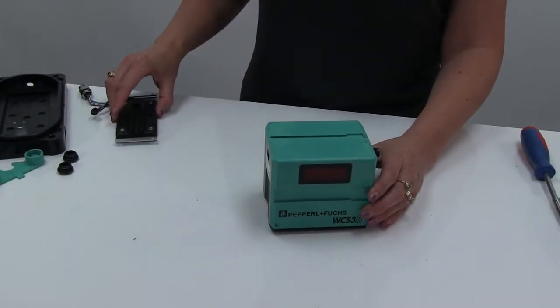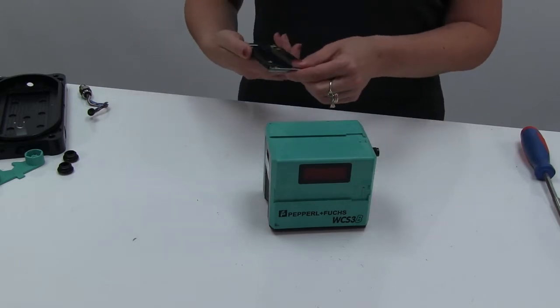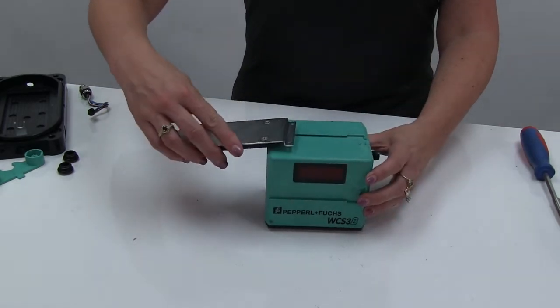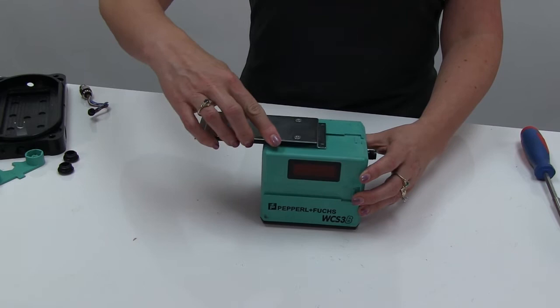The first step is to install the mounting plate on your reed head. Simply line it up and slide it on until it clicks.